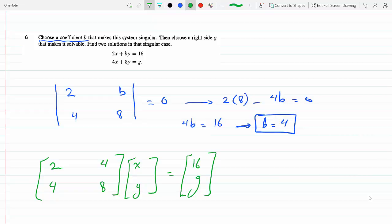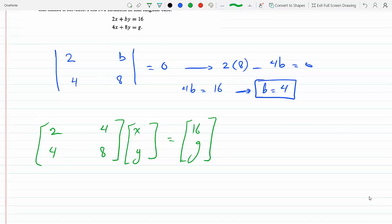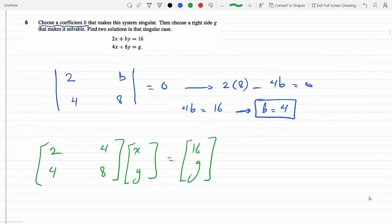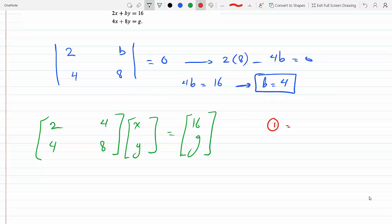This is a singular matrix, so one equation is a multiple of the other. As long as 2x plus 4y equals 16 and 4x plus 8y equals G are not the same equation, there's not going to be a solution. We have two choices: either no solution, which we don't want because the question says it's solvable, or infinitely many solutions when one equation is a constant multiple of the second equation.